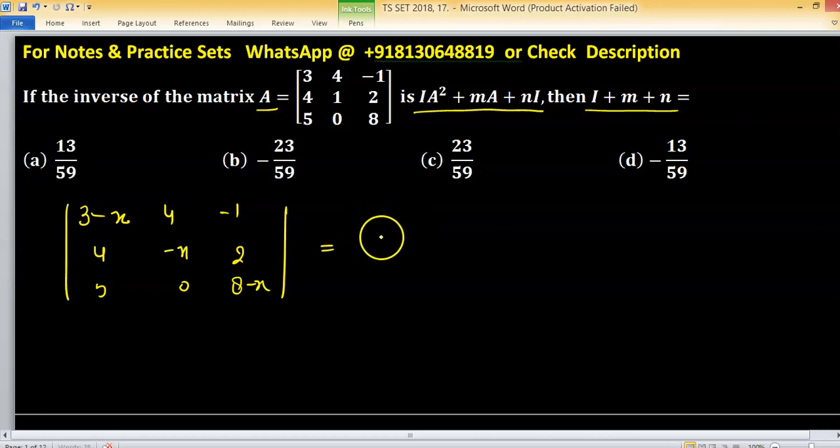This is coming from A minus xI. To evaluate the characteristic polynomial, we expand this one.